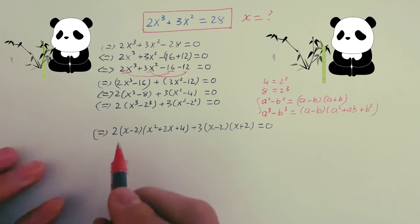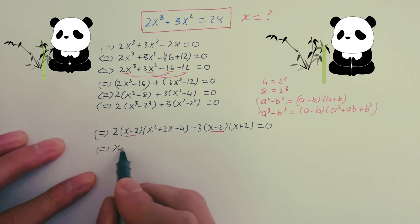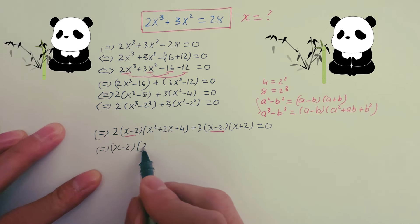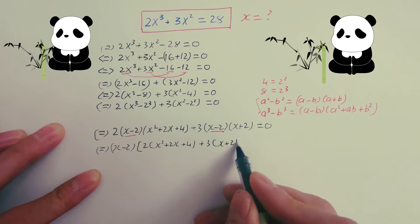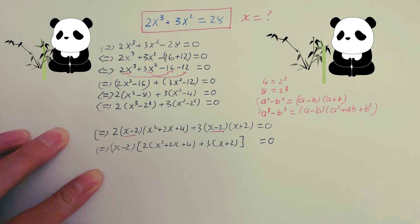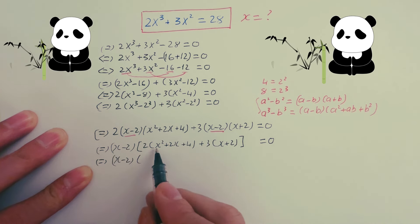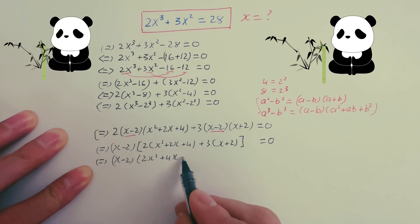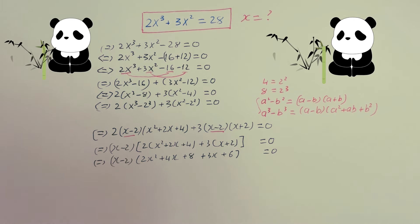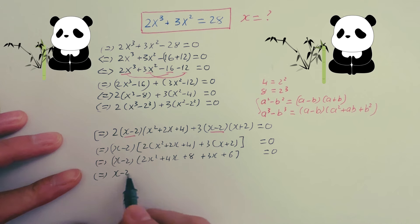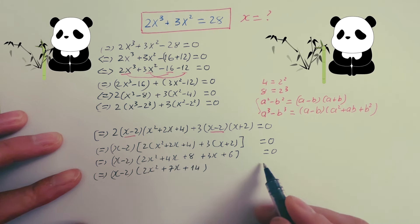Now you can see (x minus 2) appears in both terms, so take out (x minus 2) outside the bracket. Inside you have 2 times (x squared plus 2x plus 4) plus 3 times (x plus 2), which simplifies to give 2x squared plus 4x plus 8 plus 3x plus 6, and that equals 2x squared plus 7x plus 14 equals zero.